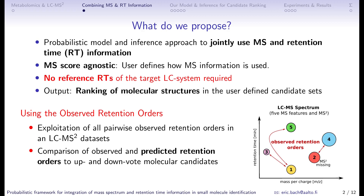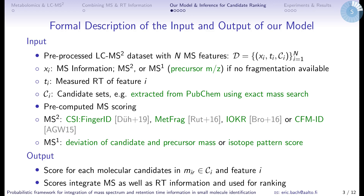I have depicted the concept here. On the right you see the different features and based on their retention time you see in which order they have been coming out from the LC system. This defines the observed retention orders, and by looking at all pairwise observed retention orders and comparing those with predicted ones, we can up or downrank certain molecular candidates.